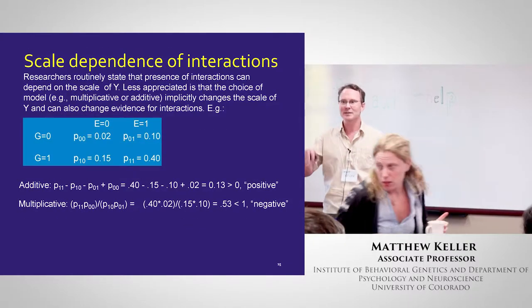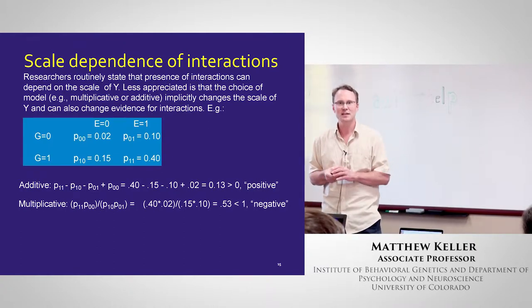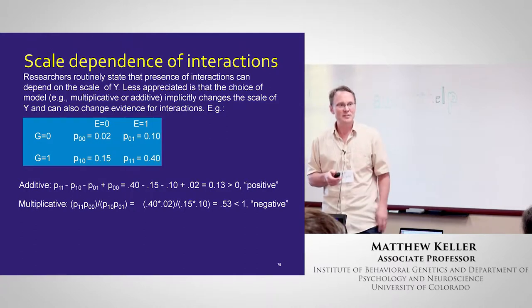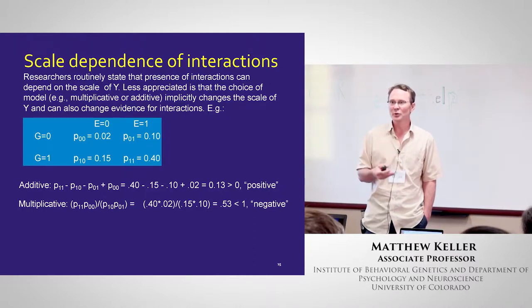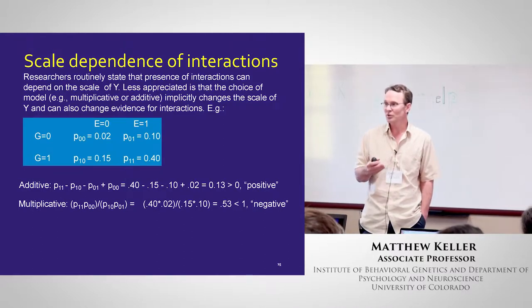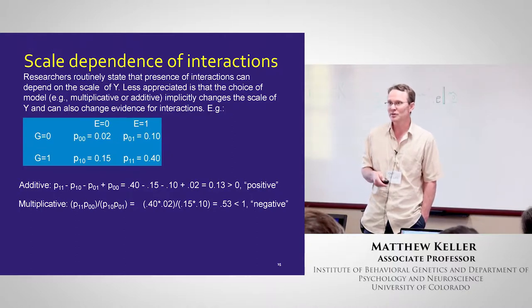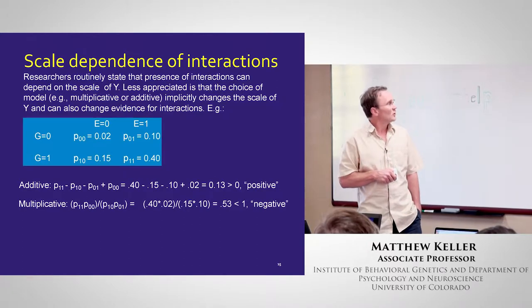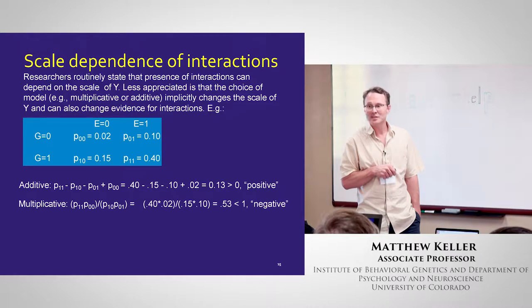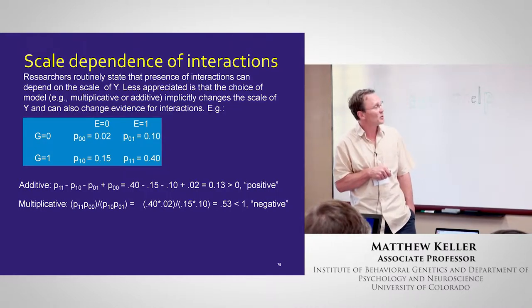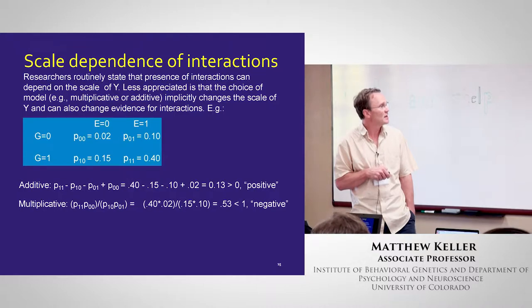Researchers routinely mention in discussion sections that interactions depend on the scale — but it's really a fundamental issue that shouldn't just be hand-waved away. It's imperative to report interactions on both scales. Whether you use logistic regression or OLS will change the scale of Y, and taking the log of Y versus Y itself implicitly changes the scale and can change evidence for an interaction. Here's a toy example: eyeballing the probabilities, the excess risk for G alone is about 8 percentage points and for E alone about 13 points — 8+13 is less than 38 — so on the additive scale there's a positive interaction.